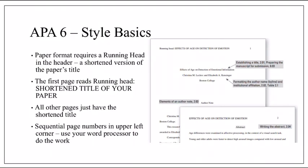The APA 6 title page requires the title of your paper, your name, and the school's name, all centered about a third to halfway down the page, as shown in this example. The major difference from MLA is that in APA, the header contains a running head — a condensed version of your title no more than 50 characters — along with just the page number. You don't need your name with the page number.